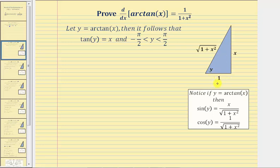Therefore, using the Pythagorean theorem, we can determine the length of the hypotenuse would be the square root of the quantity one squared plus x squared, or just the square root of the quantity one plus x squared.